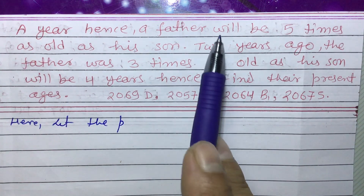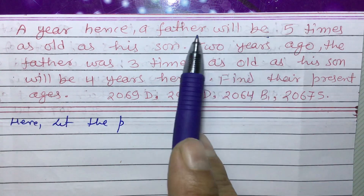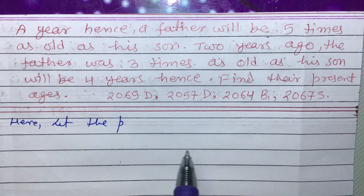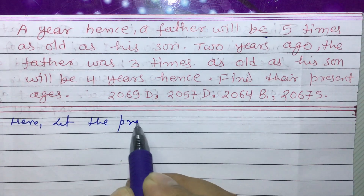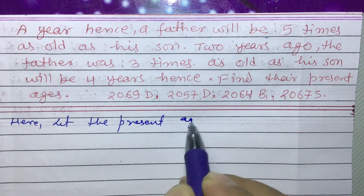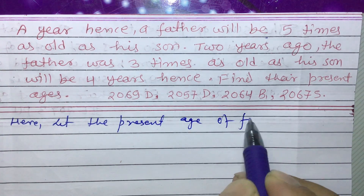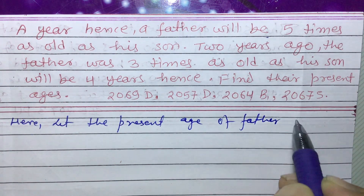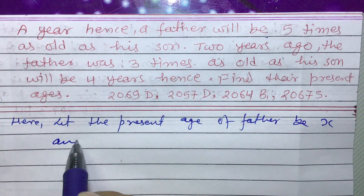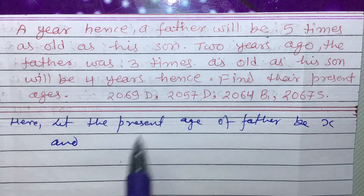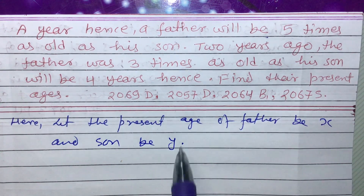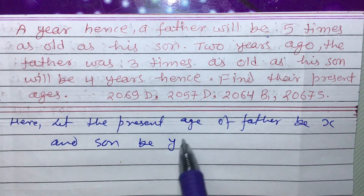Now let us learn this one. Here, let the present age — always, if you are asked to find the age of a father, son, mother, daughter, or sister, always suppose the present age. Let the present age of the father be x and the present age of the son be y.